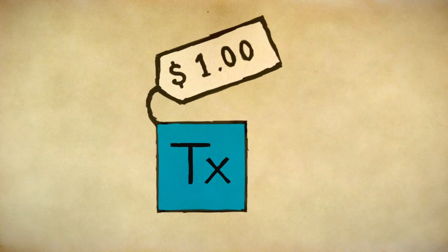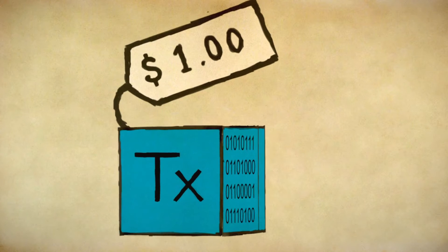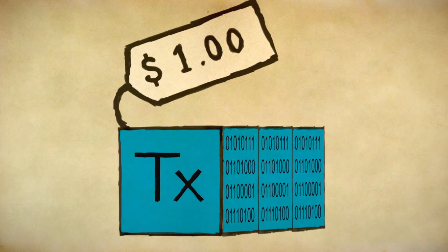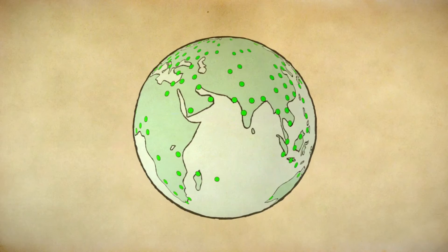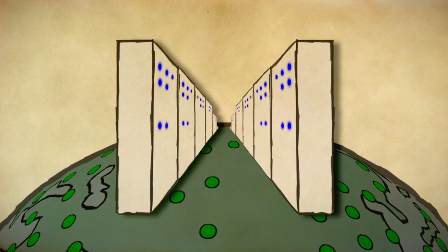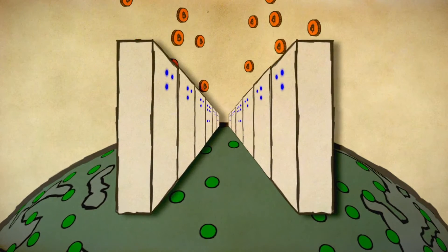The easy thing to do is just have everyone change their software to accept bigger blocks all at once. Fees would go down, but you will need an expensive data center to run a node, and you won't be able to do it anonymously.